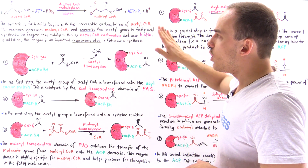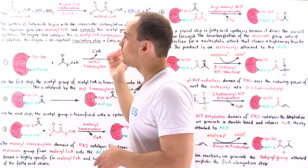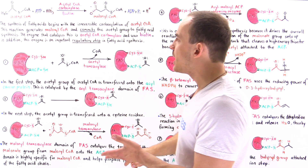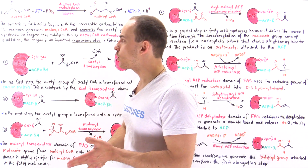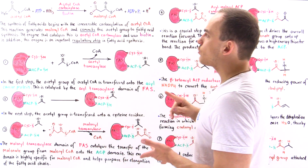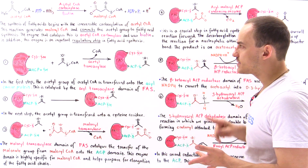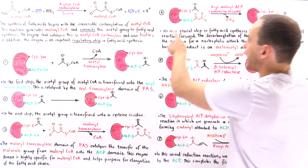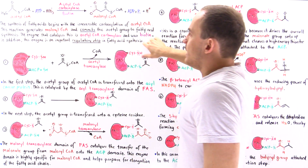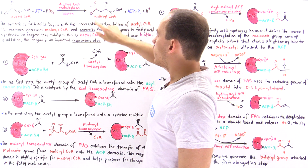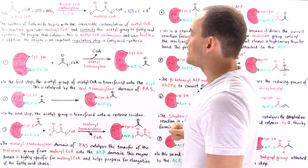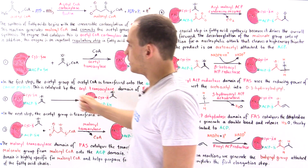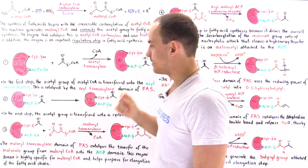Remember three things about this step: number one, it commits the molecule; number two, it is a regulatory step; number three, it is the rate-limiting step. We will come back to this step when we look at step four. Once we form malonyl coenzyme A, let's set it aside for a moment and look at step one of the fatty acid synthase reactions.